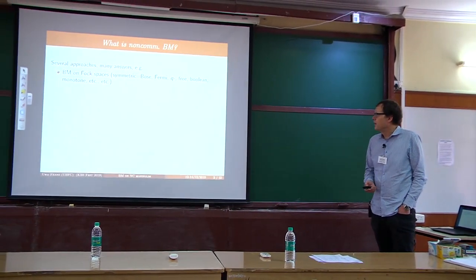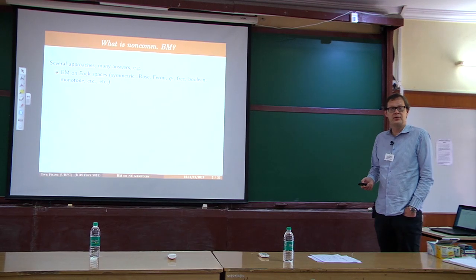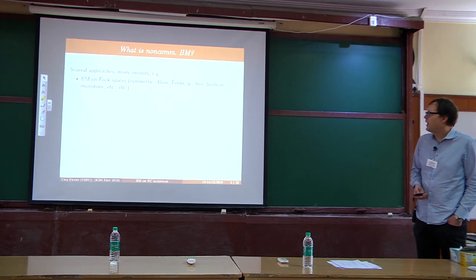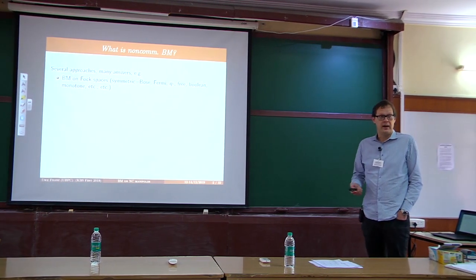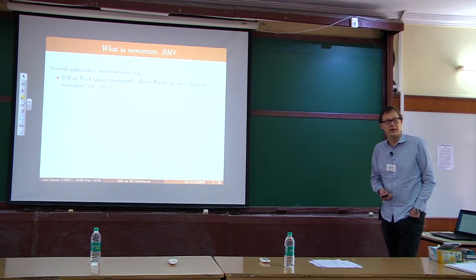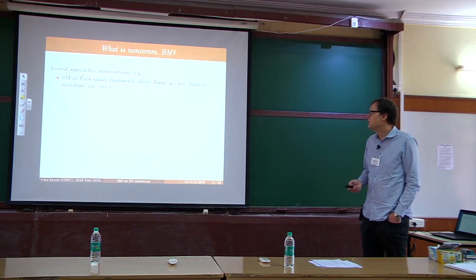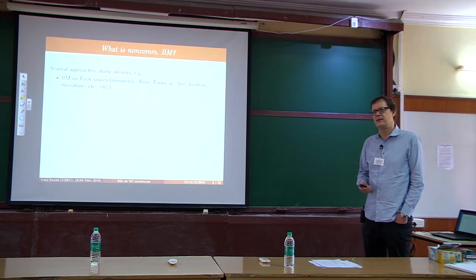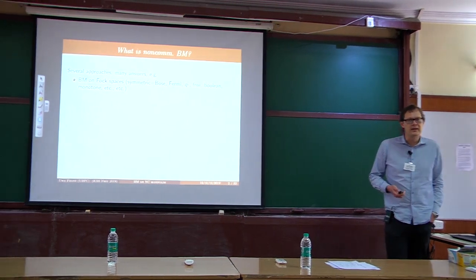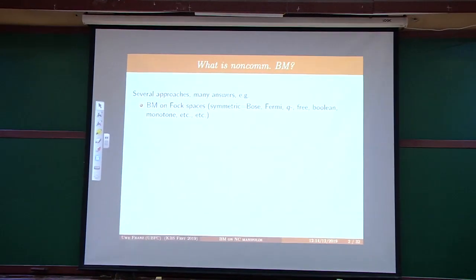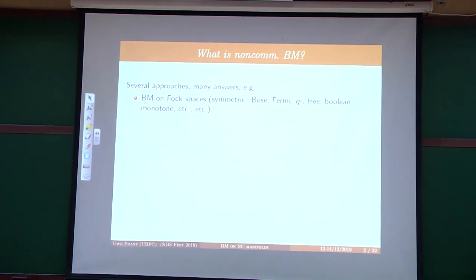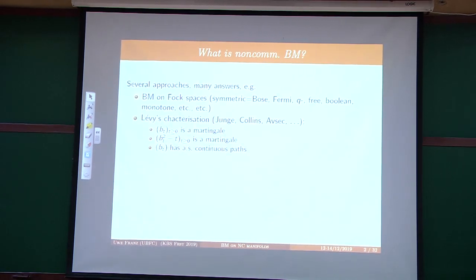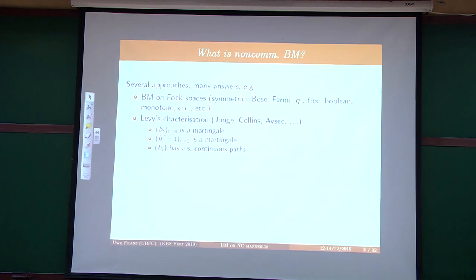When you ask a quantum probabilist what is Brownian motion, you can get different answers depending on who you ask. Going back a long time, we have Brownian motions from Hudson and Parthasarathy — Brownian motion on the symmetric Fock space, for which you have a nice stochastic calculus. We can do Fermi, we can do Q-deformed, we can do free, which is Q equal to zero but which has a theory that goes much further. We can do monotone independence, interacting Fock spaces, and many other things.